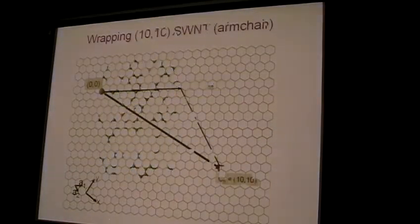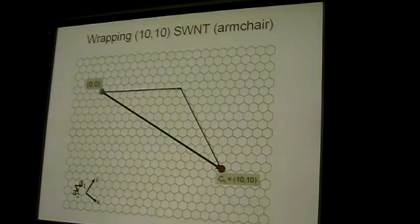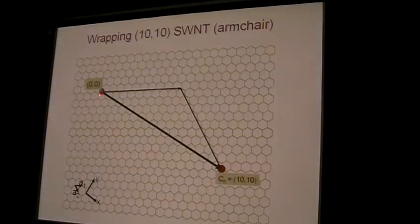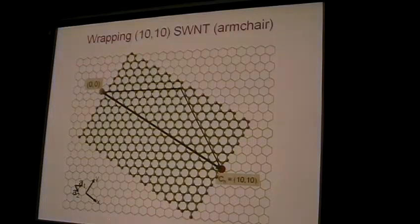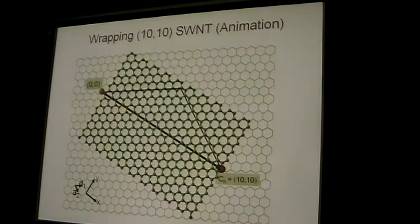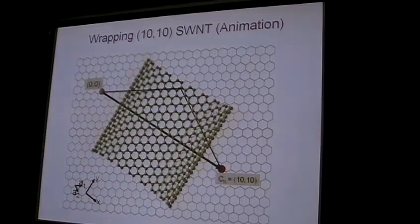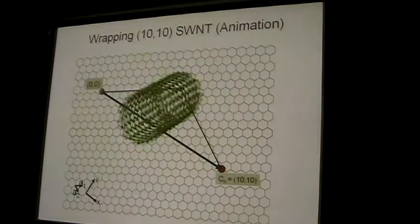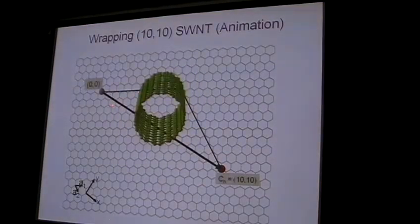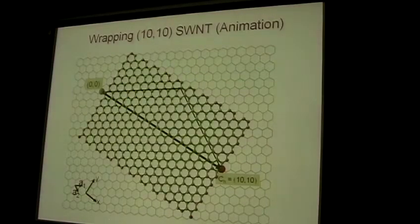Of course, you can make different kinds of nanotubes. Here, from the origin to the point (10,10), you define another kind of nanotube with a different structure. This is still a single-wall carbon nanotube.